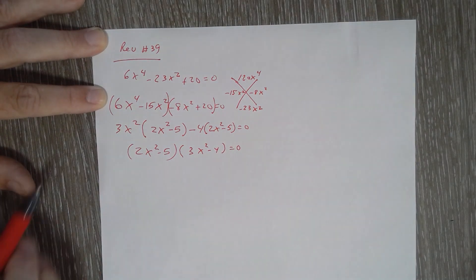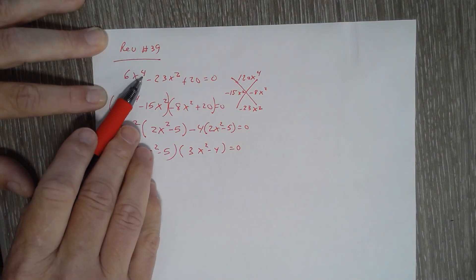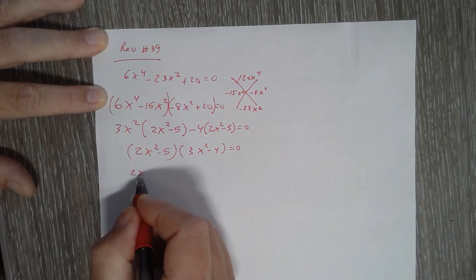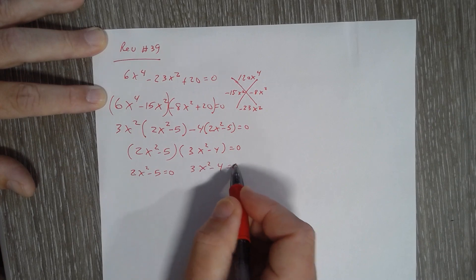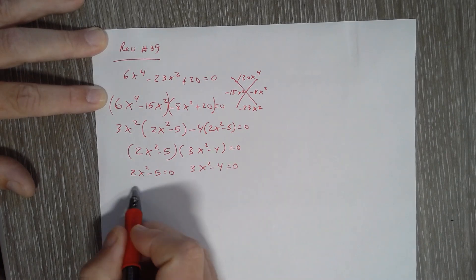Now when I'm solving this problem, in the beginning, I recognize there has to be four solutions. So I take each of these, set them equal to zero, and now I can solve them all.